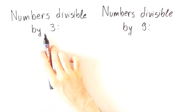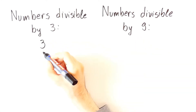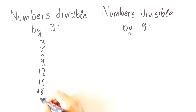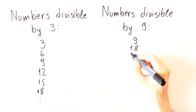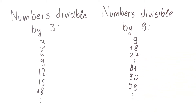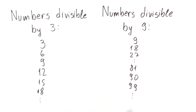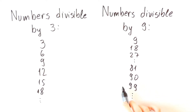Let's write some numbers that are divisible by 3 and some that are divisible by 9. If we look at any number that is divisible by 3, we will see that the sum of its digits is also divisible by 3. The same is true for numbers divisible by 9 — any number that is divisible by 9 has the sum of its digits also divisible by 9.